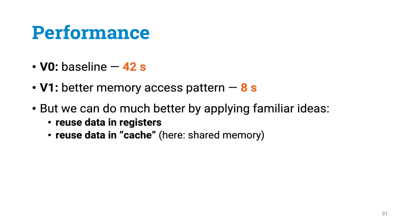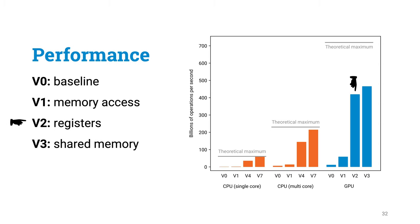Now, of course, this is not the best that we can do with GPUs. Having cheaper memory lookups is nice, but having fewer memory lookups is even better. And if we apply the familiar idea of reusing data in registers, we can get really big performance improvements already outperforming our near-optimal CPU solution.